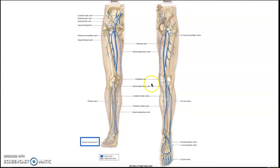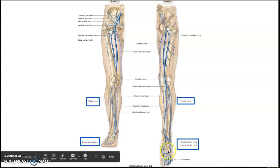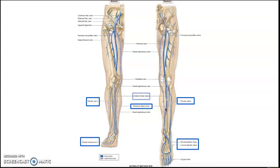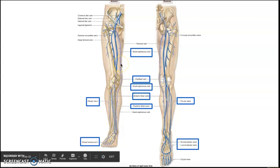In the lower extremities, we have the dorsal venous arch as well as medial and lateral plantar veins. These drain into the fibular veins — close to the fibula — and the posterior tibial veins. The dorsal venous arch drains into the anterior tibial veins. We also have the small saphenous vein and the popliteal vein. The popliteal vein is the largest behind the knee, but the longest vein is the great saphenous vein, which runs all the way up the medial side of the leg and thigh.